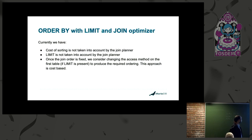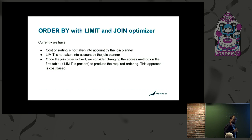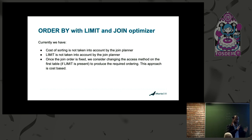Currently, the ORDER BY LIMIT optimizer does not take the cost of sorting into account. LIMIT is not taken into account, and the only way to shortcut the join execution is after a join order is picked. We check if an index can be used to shortcut the execution, or if equality propagation could allow filesort on the first table, but the join planner itself does not take LIMIT into consideration. All these checks are done after the join planner has already picked a plan.